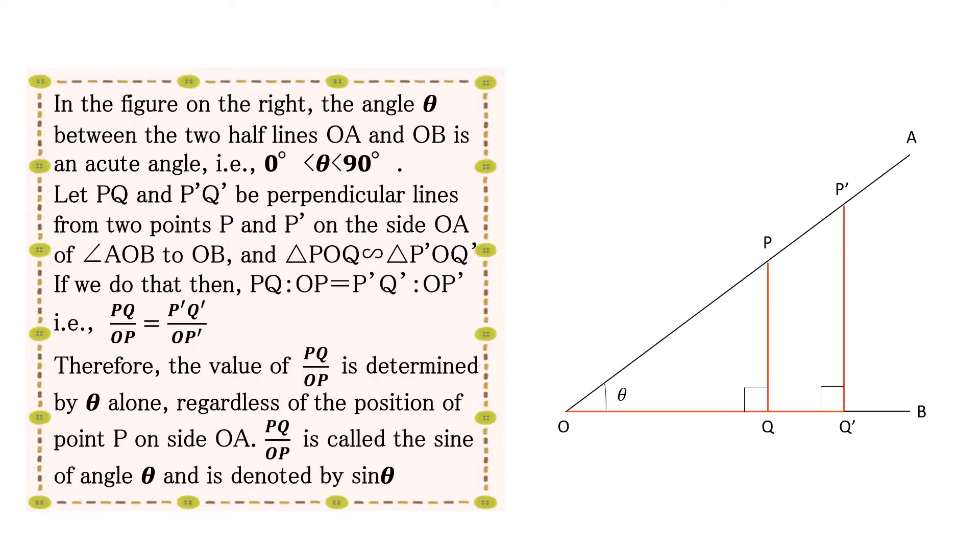Next we'll prove that the ratio is true. In the figure on the right, the angle theta between the two half lines OA and OB is an acute angle. In other words, theta is greater than zero degrees and less than 90 degrees.